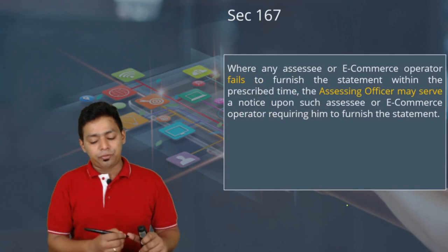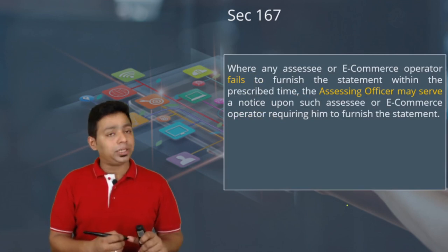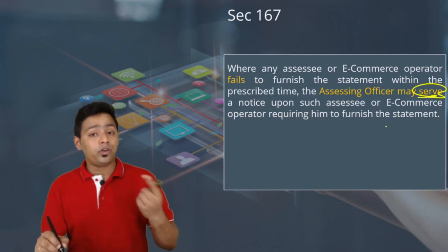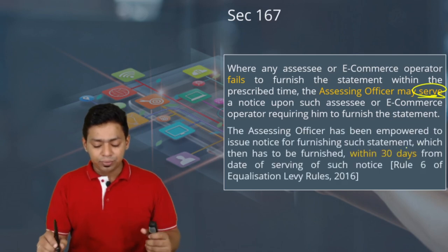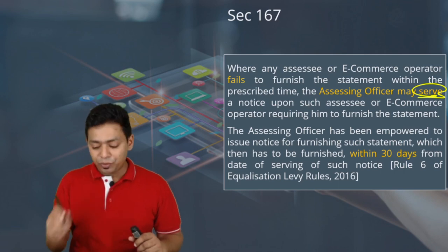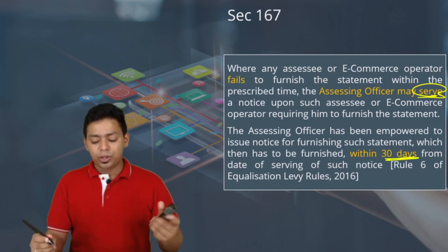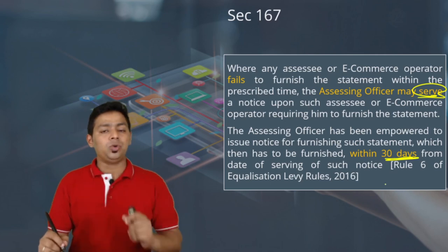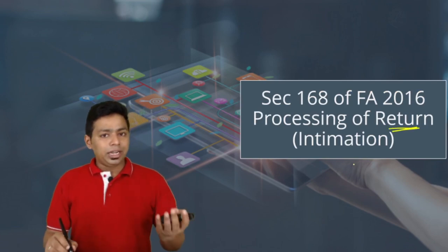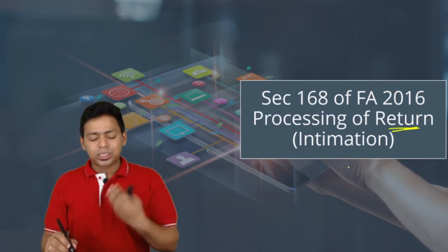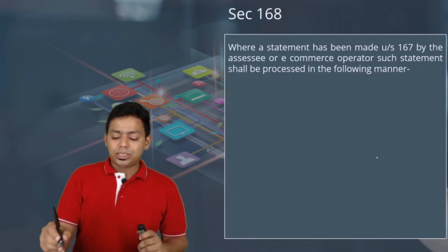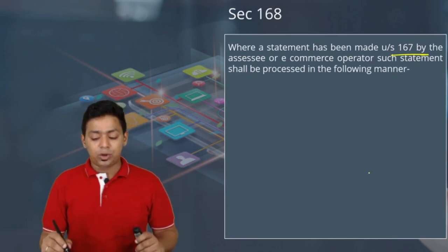Where any assessee or e-commerce operator fails to furnish the statement within the prescribed time, the Assessing Officer may serve a notice — similar to Section 142 notice for furnishing the return. The AO is empowered to issue a notice requiring the statement to be furnished within 30 days from the date of service of that notice. Once the statement is furnished, the government will give you an intimation — similar to Section 143(1) intimation for income tax returns.